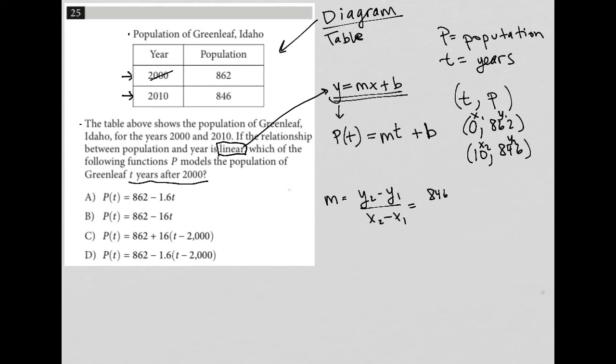846 minus 862 over 10 minus 0. And that is going to be negative 16 over positive 10. And that equals negative 1.6. So my m is equal to negative 1.6.